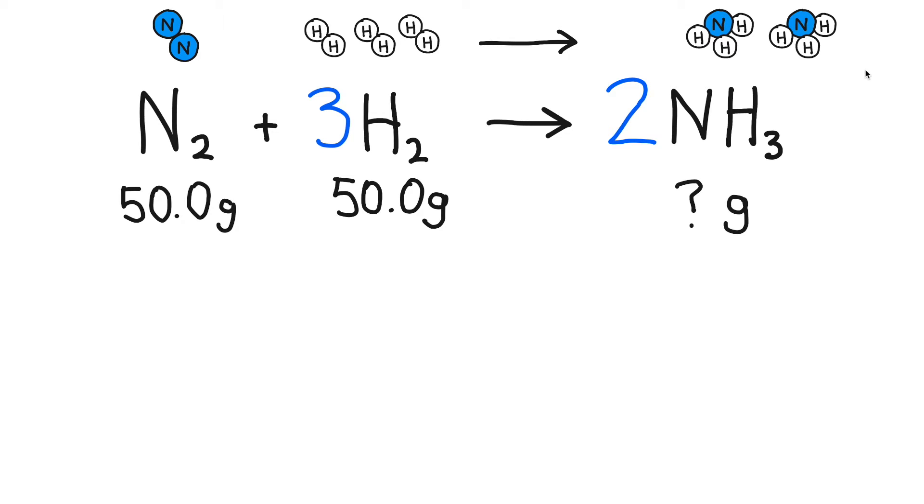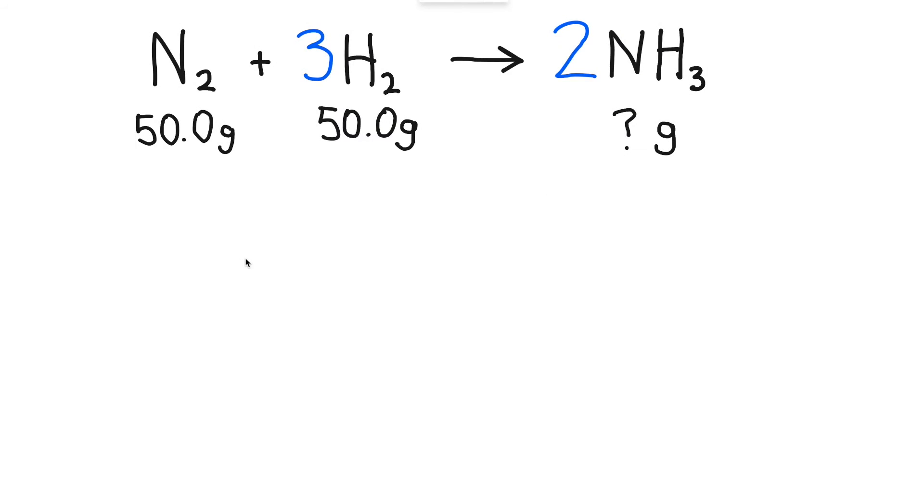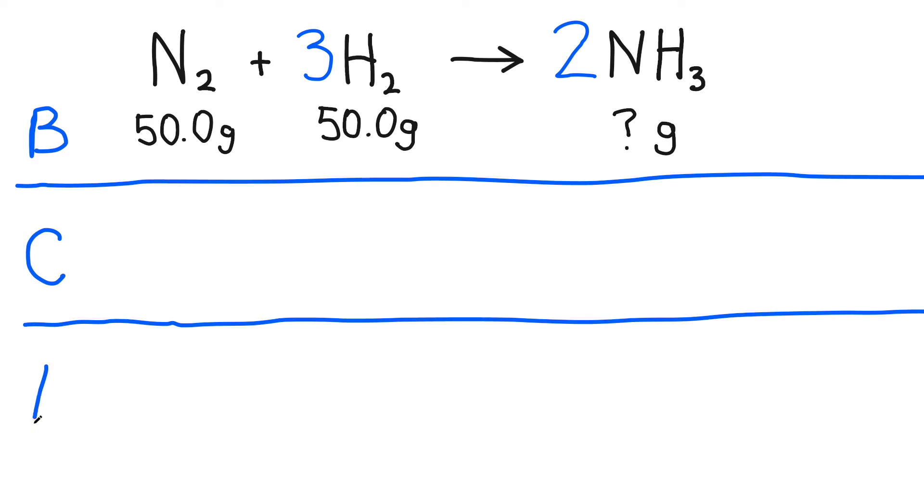To do the BCA chart, I need to give myself a little bit more room. In order to use the BCA chart method, we need to make a line for B, that stands for before, C, that stands for change, and A, that stands for after. I usually do it like this. Now before the reaction happens, there's no product. So what I'm going to do here is simply write zero grams.